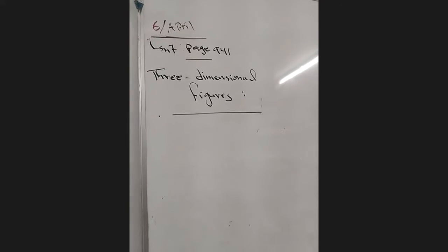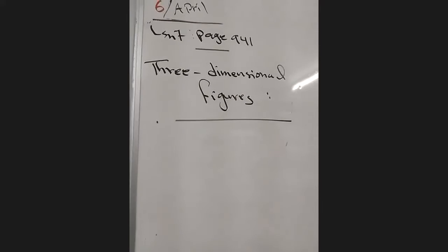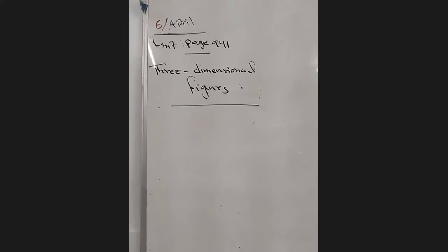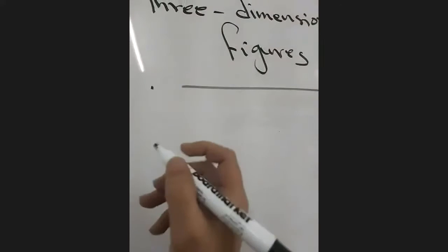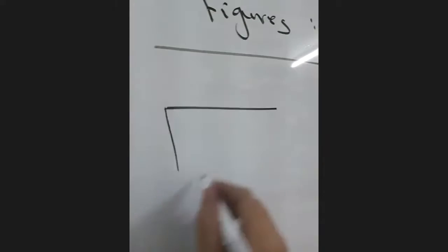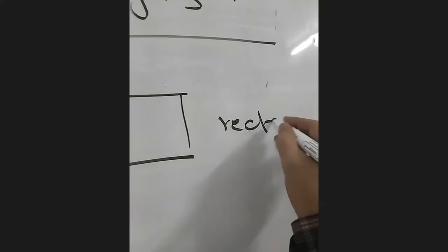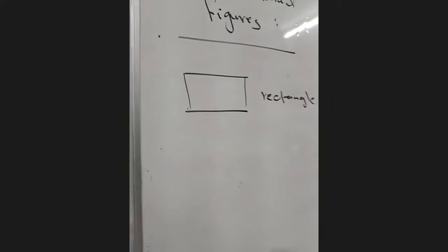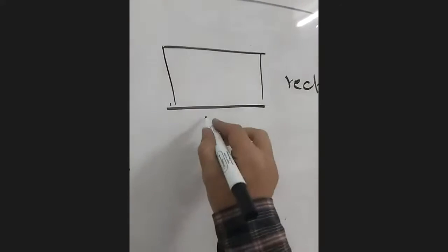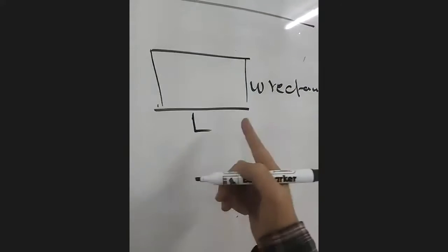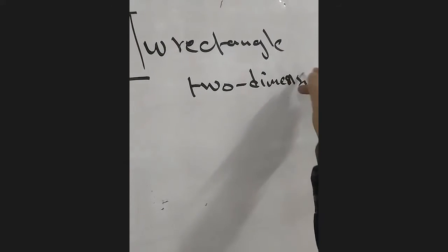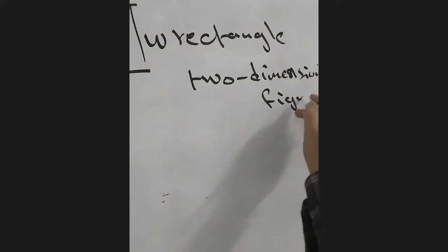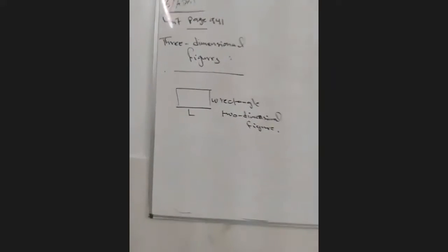Okay guys, hello everyone. Today we'll take lesson seven, page 941: three-dimensional figures. Now, we took figures before like a parallelogram, triangles, and polygons in general. The rectangle we call a two-dimensional figure because it has length and width — two dimensions. So the rectangle we call it a two-dimensional figure.